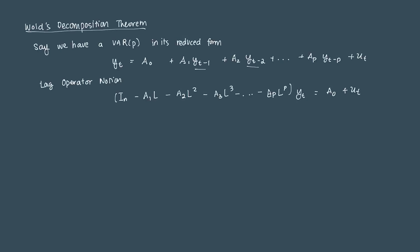Now we can rewrite this further in something called lag polynomial form. All that is is that this entire thing here, A(L)Yt, equals A0 plus Ut. This A(L) is called your lag polynomial.